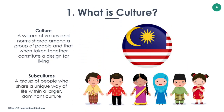In addition to culture, we also have subcultures, which refer to a group of people who share a unique way of life within a larger dominant culture. For example, a dominant culture is our own national culture — Malaysia's culture. The Malaysian culture consists of subcultures such as the Malay culture, the Chinese culture, the Indian culture, and the indigenous Bumiputra culture.